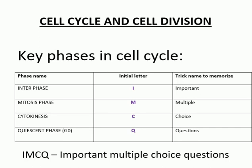The major phases involved in the cell cycle are: interphase, mitosis phase, cytokinesis phase, and G-zero (quiescent) phase. The trick here is important multiple choice questions, made from the initial letters of these phase names.